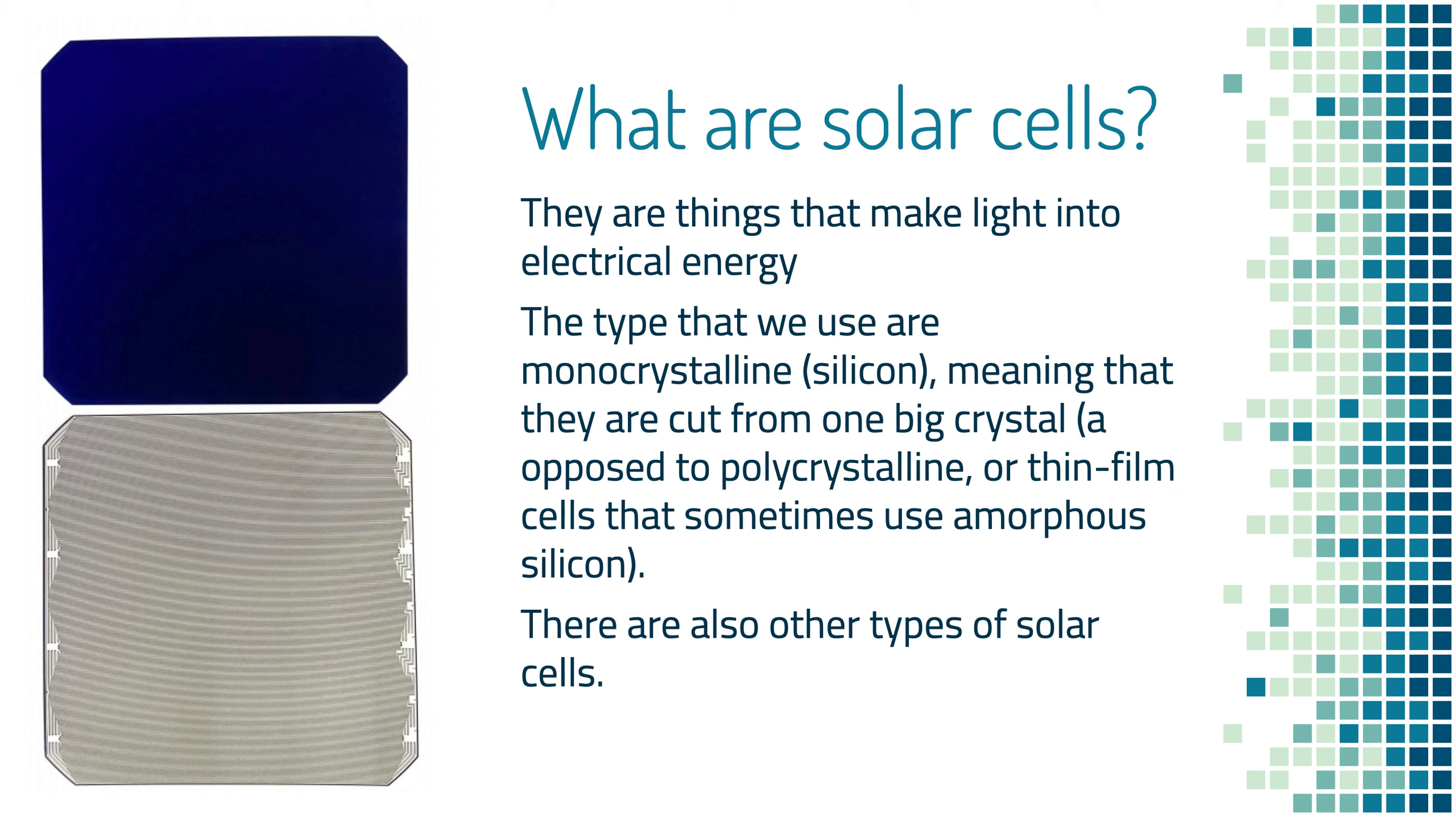Starting off, what are solar cells? They're things that make light into electrical energy. We use monocrystalline silicon solar cells, meaning that they're cut from one big crystal or ingot of silicon, as opposed to polycrystalline, which is multiple kind of smushed together, or thin film that sometimes use amorphous silicon. There are also other types of solar cells that use different materials, like gallium arsenide solar cells, or perovskite ones or organic ones. However, those are either really expensive or still in development, so not really commercially available.